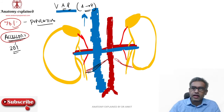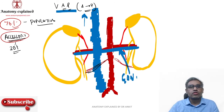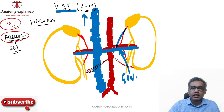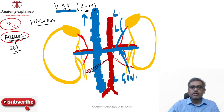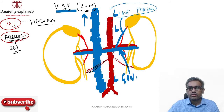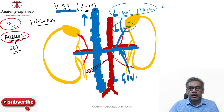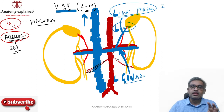The left renal vein drains the left gonadal vein and the left adrenal vein. The left adrenal vein may sometimes be accompanied by the left inferior phrenic vein. The left adrenal vein always drains into the left renal vein, and the left gonadal vein always runs into the left renal vein. So the veins are located right in front of the artery.